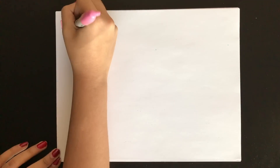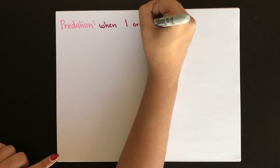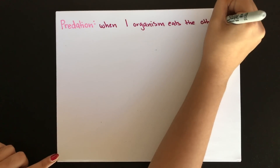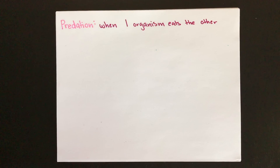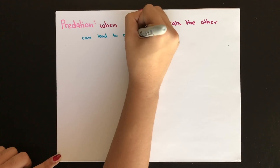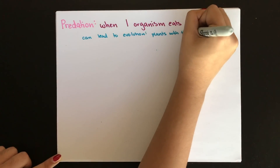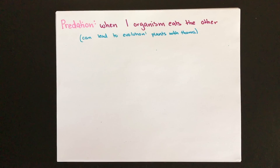If two populations have the same niche, there will likely be competition between them for resources. When one organism devours another — which is possible in competition — it is known as predation. But predation doesn't necessarily mean death. For example, a giraffe eating a plant isn't killing it, just eating some leaves. Predation can lead to both prey and predator evolving; the plants evolved to have thorns in response.